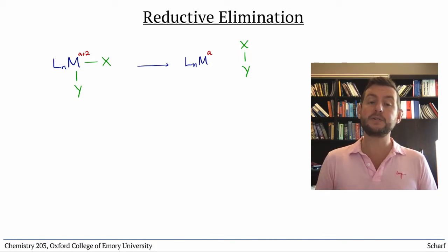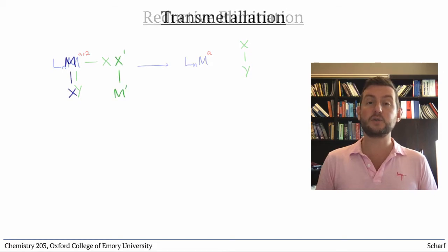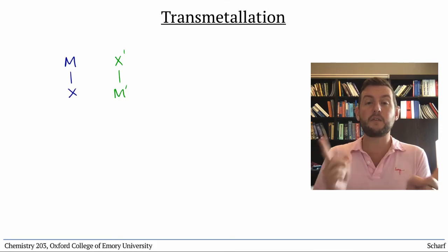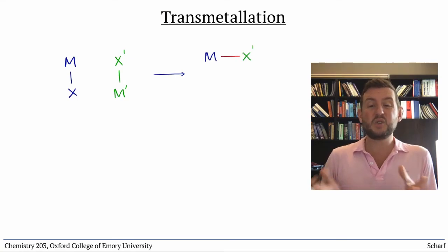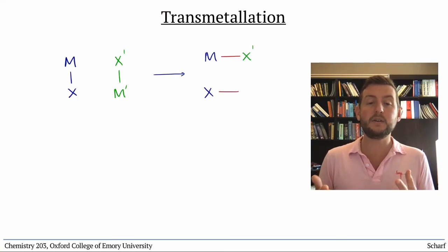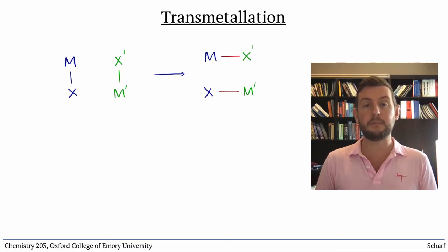The final metal-centered reaction we'll discuss is called transmetallation, and it involves the transfer of X-type ligands between two metal atoms. This process swaps an X-type ligand on one metal for an X-type ligand on a different metal.